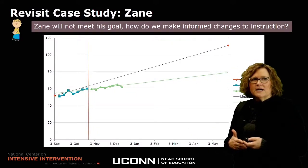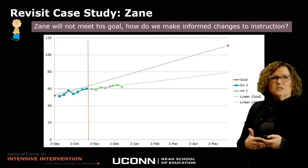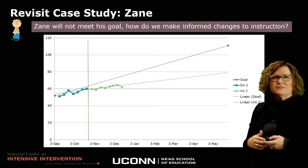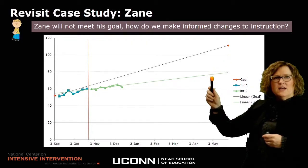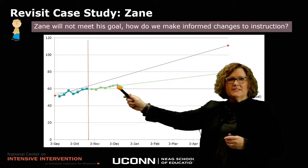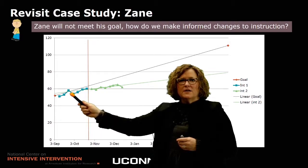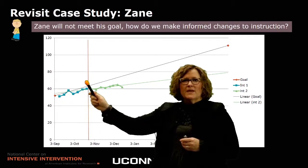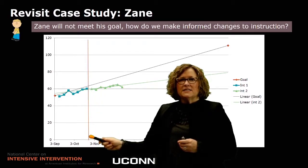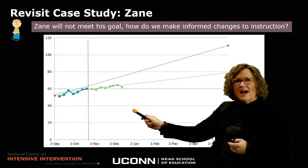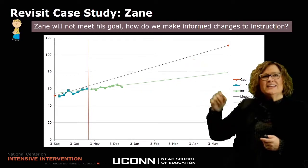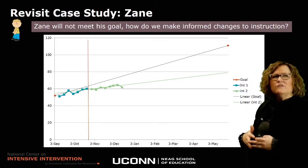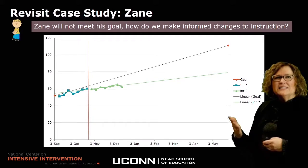You might have met Zane in one of our other modules. Zane is a student who has a learning disability and is in third grade. Here is his graph data. You can see his goal up here — that line ending in red. This green line is actually the trend of his data for this phase. Over here is his initial data, and this vertical line indicates that the teacher wanted to make a change for Zane. When we compare Zane's trend line to his goal line, he's not on track to meet his goal.